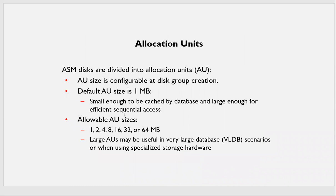Allocation units: the ASM allocation unit is the logical unit at the ASM level, starting with 1MB, 2MB, 4MB, 8MB, 16MB, 32MB, 64MB. ASM disks are divided into allocation units, and ASM files are made up of these allocation units.